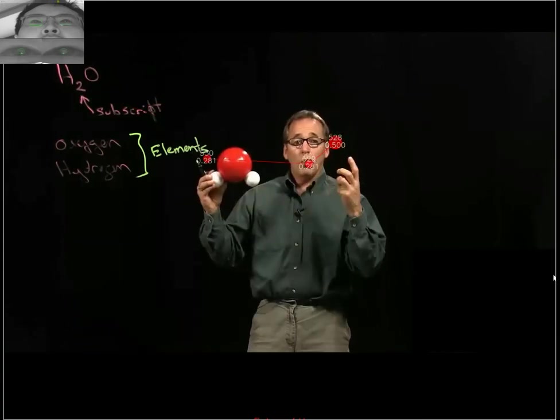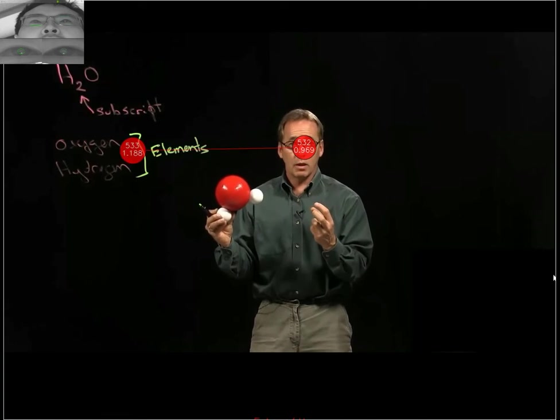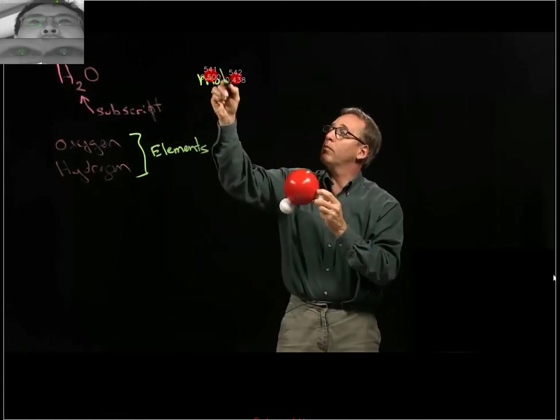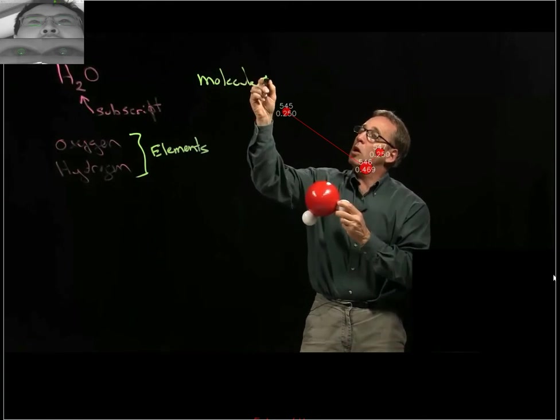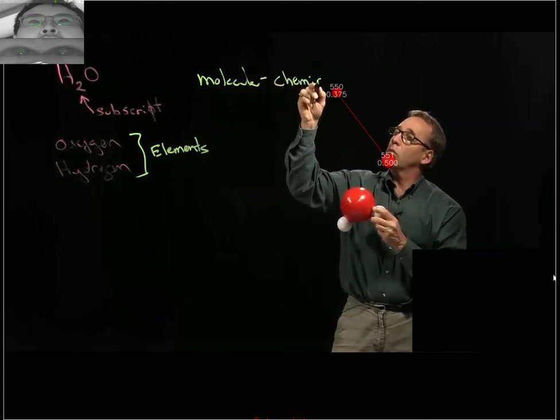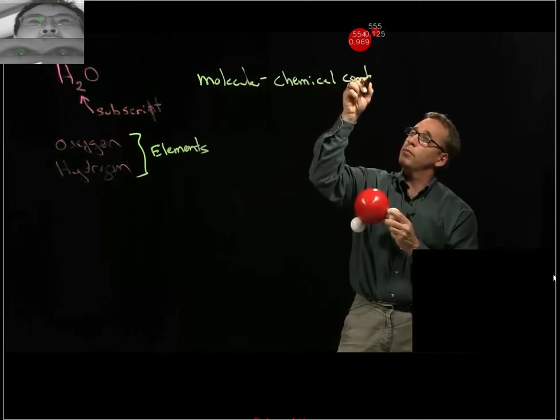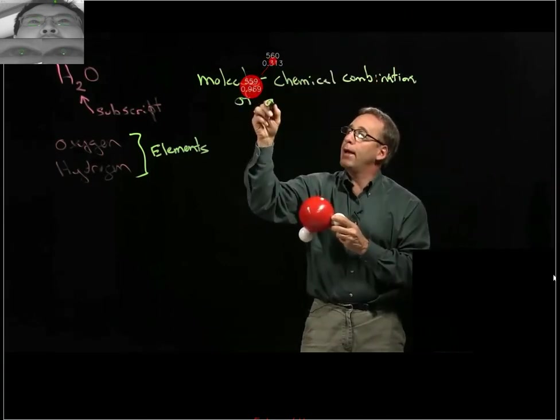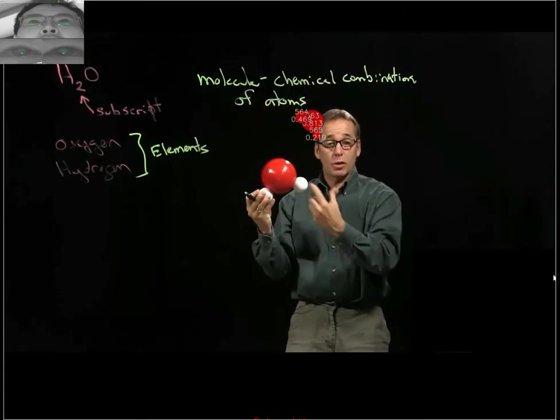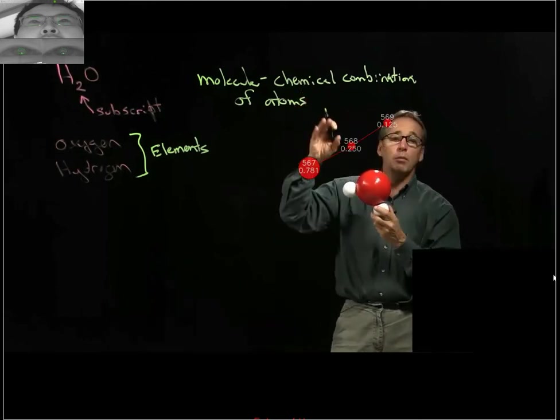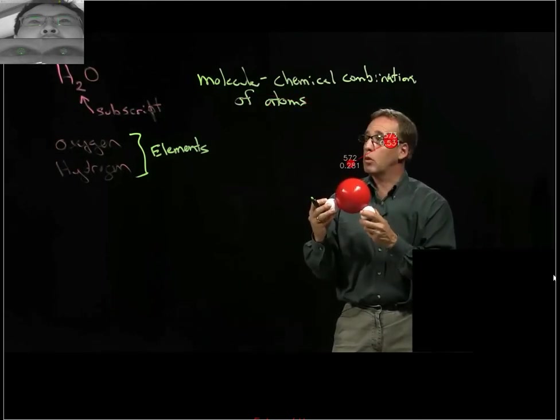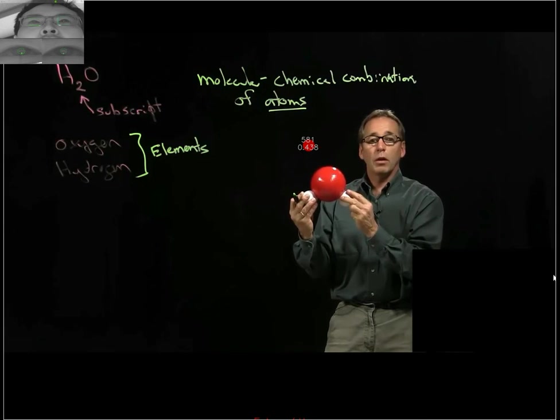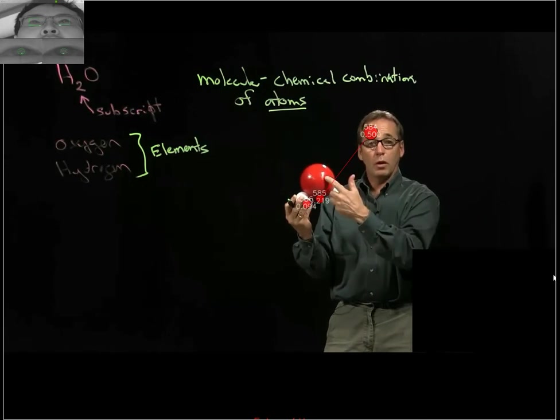When we magnify down to the particulate level in chemistry, we hit the molecular level. This is a molecule. And a molecule is a chemical combination of atoms. These spheres, again, represent the atoms. Chemical combination, we'll learn more about what chemical bonding is. But the atoms are the units that bond either to one another or to other types of atoms to form molecules.